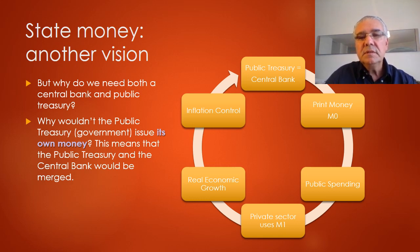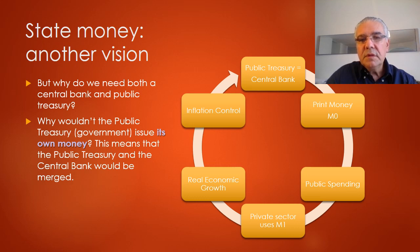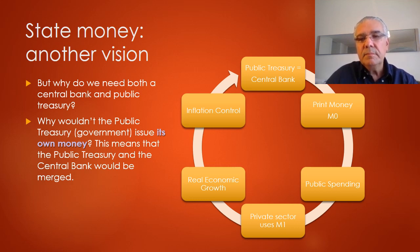So let's say the two are merged — they print money, and this money is spent by the government for its particular policies and projects. The private sector uses some of that money, but also uses money being created by the banking system, so it uses a bigger aggregate M1. This fosters economic growth. There is no reason not to expect that inflation can actually be controlled that way, the same way it is aimed to be controlled today. And we'll start over again with the public treasury and central bank printing new money and so on and so forth.